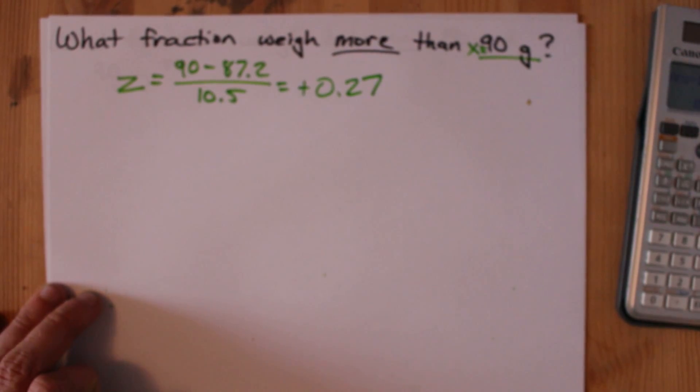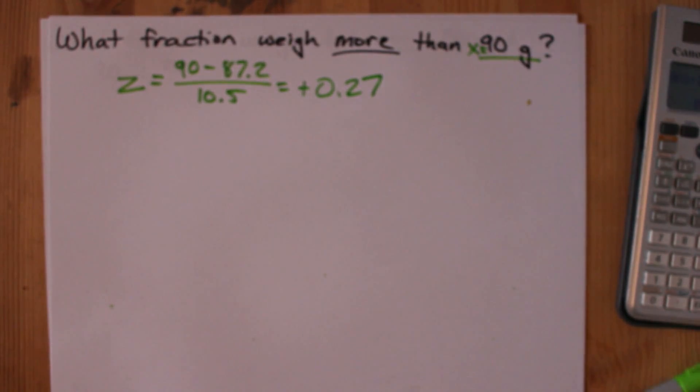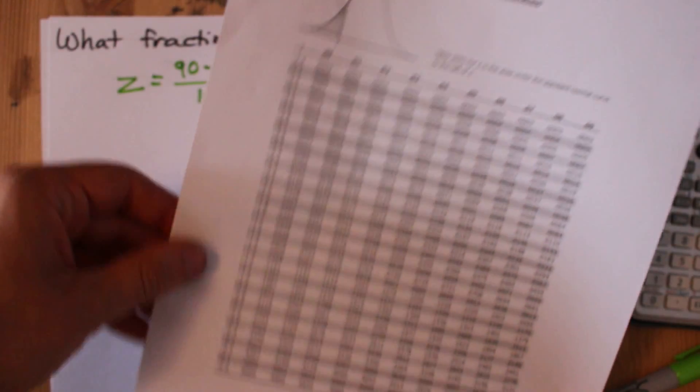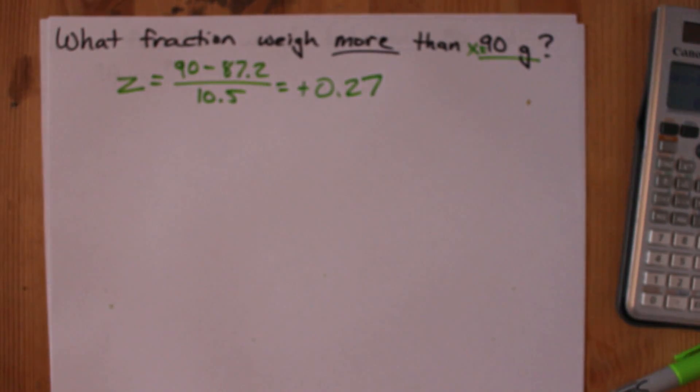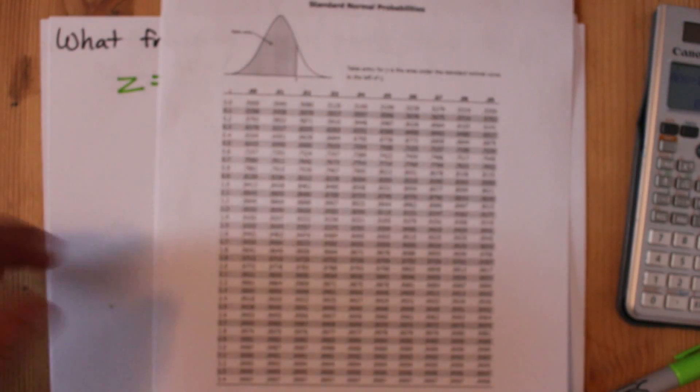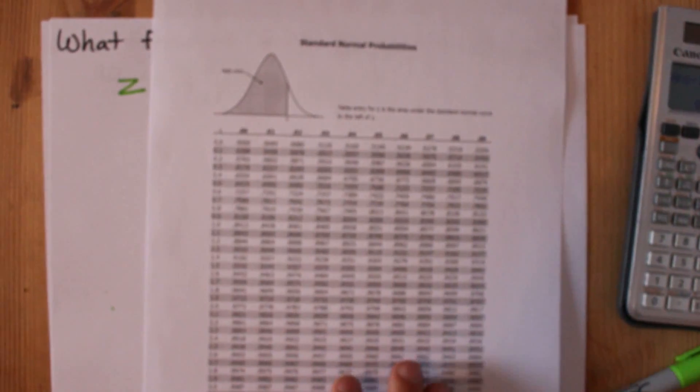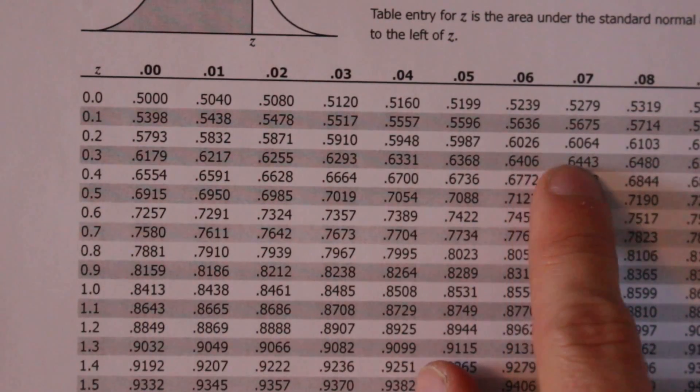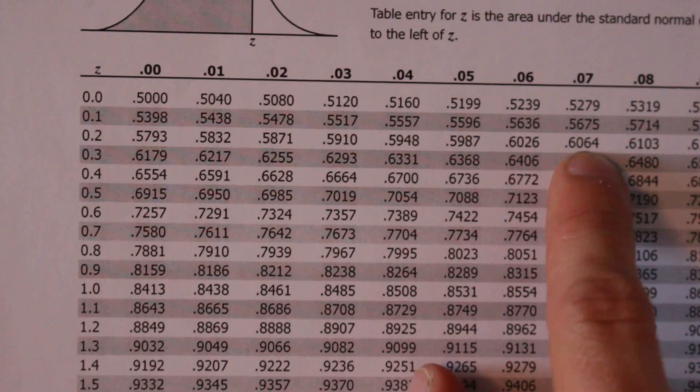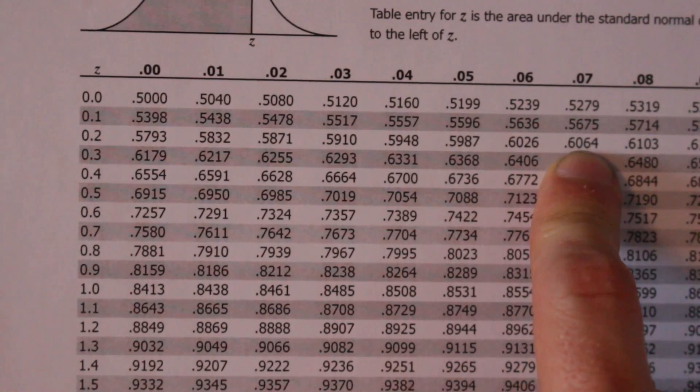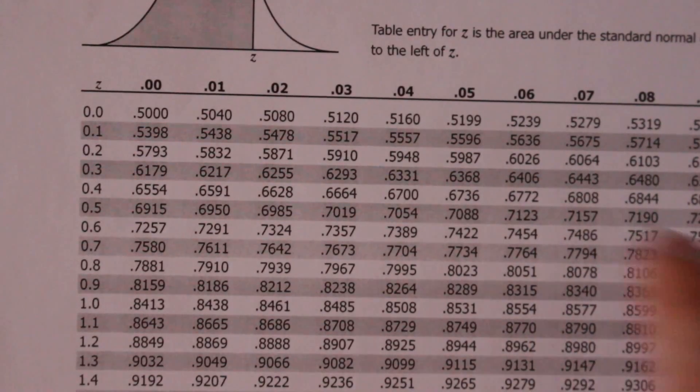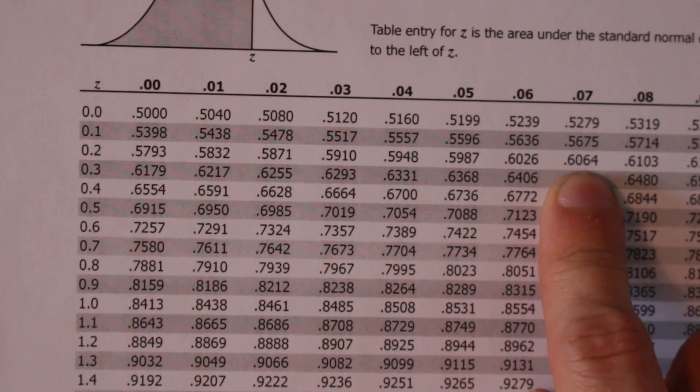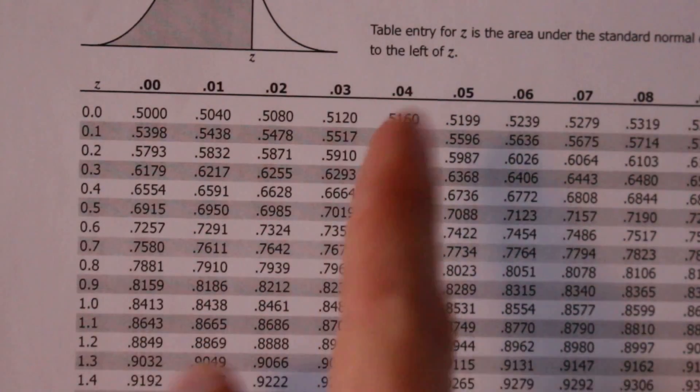Positive 0.27. Here's my 0.2, and here's my 7 column. So the answer is 0.6064. But again, that means that 60.64% of radishes weigh less than 90 grams.